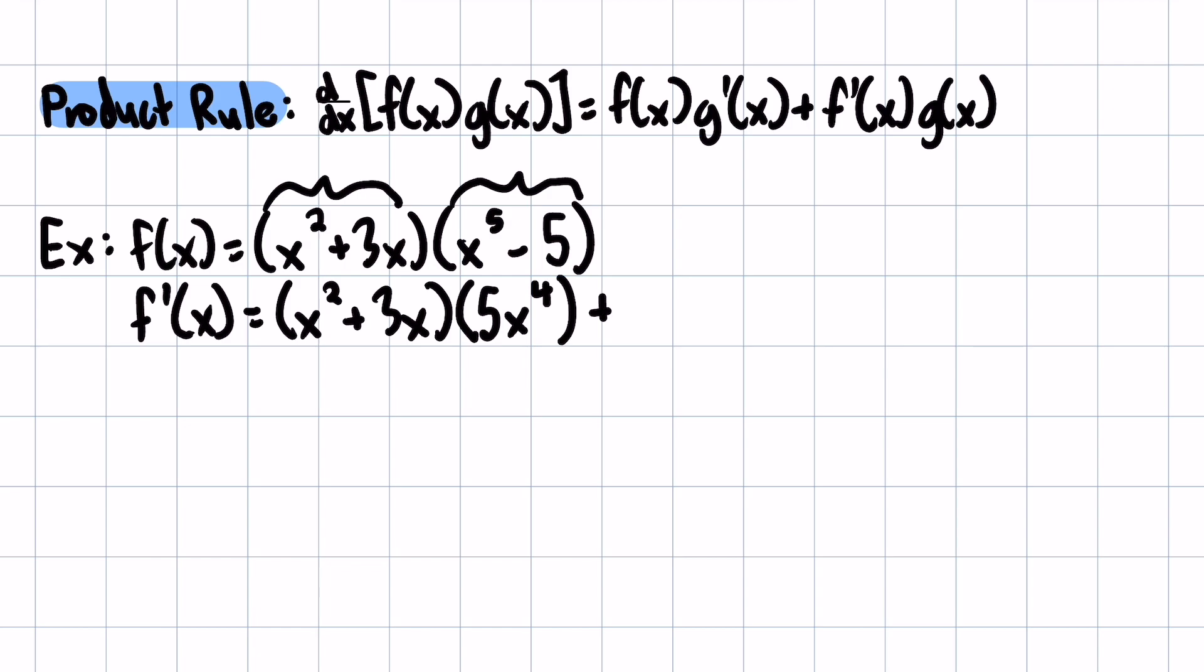And then we add the derivative of the first function. So here the x squared becomes a 2x, and the 3x becomes a 3. And then just the second function. And so that is going to be our derivative.